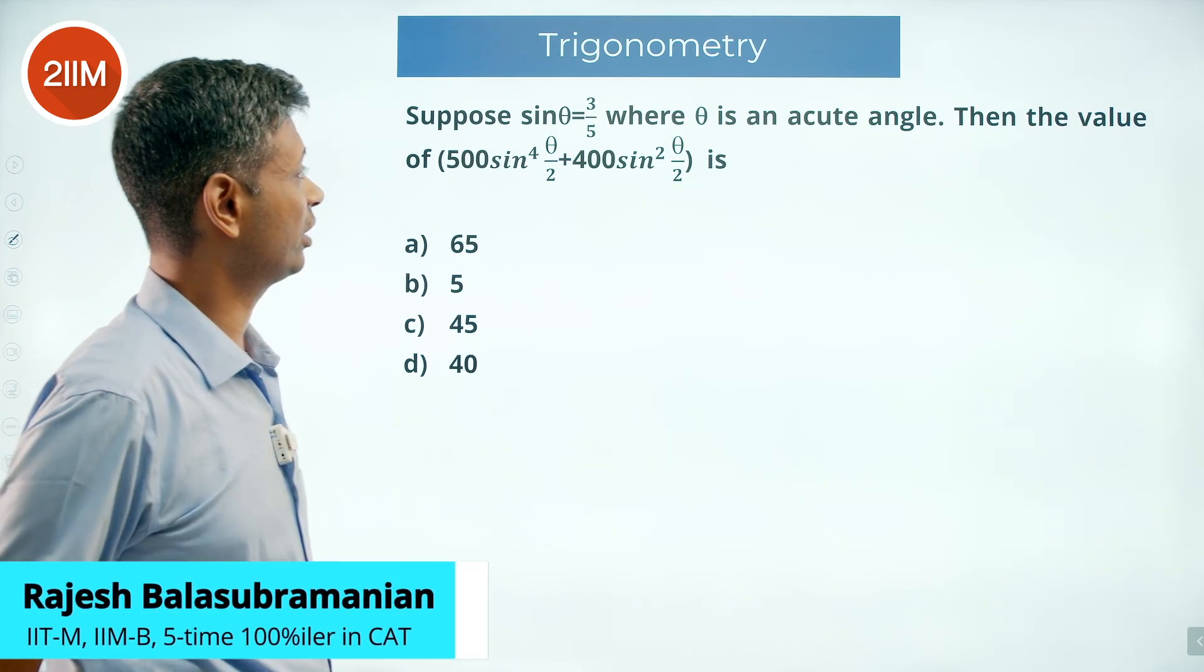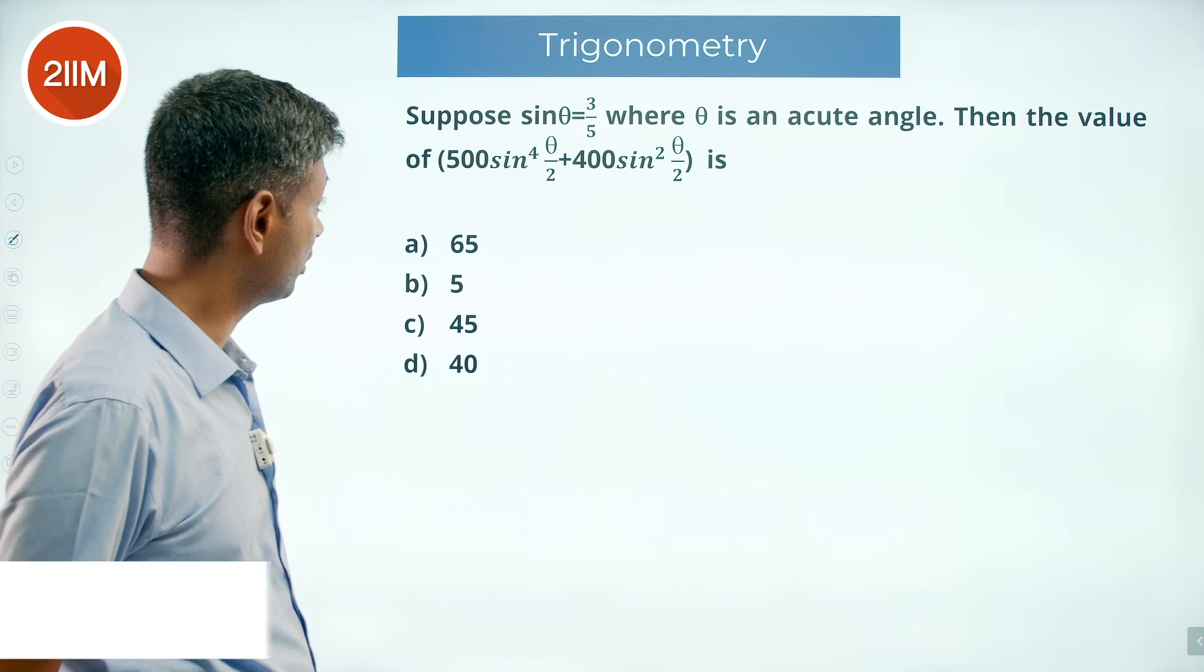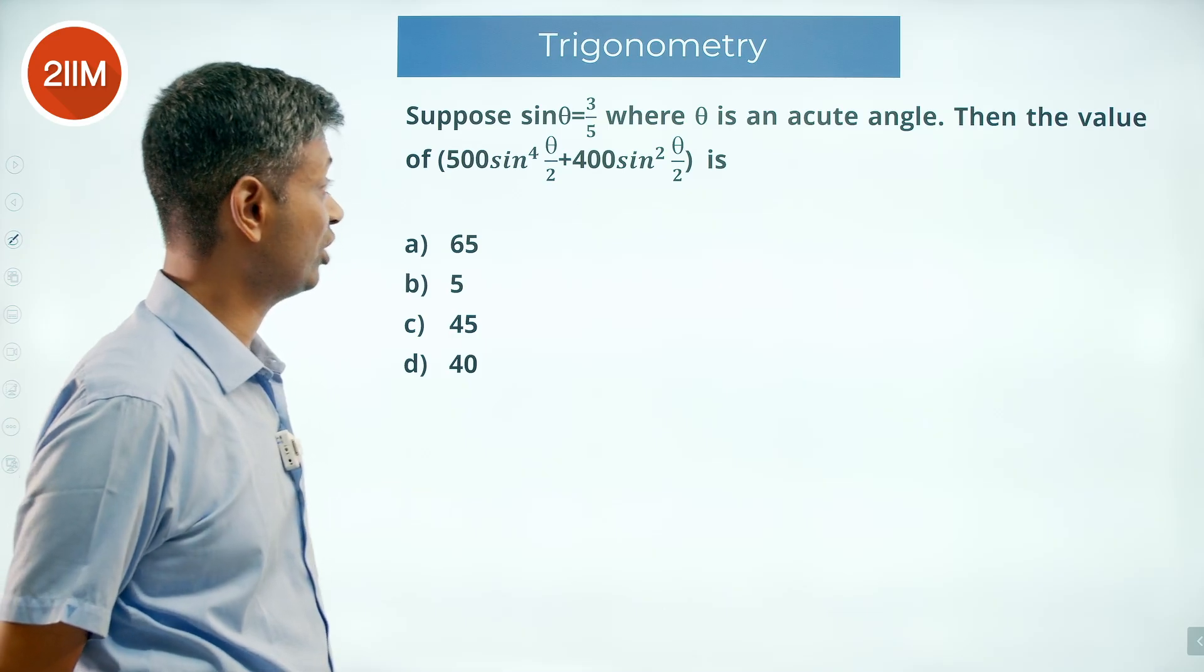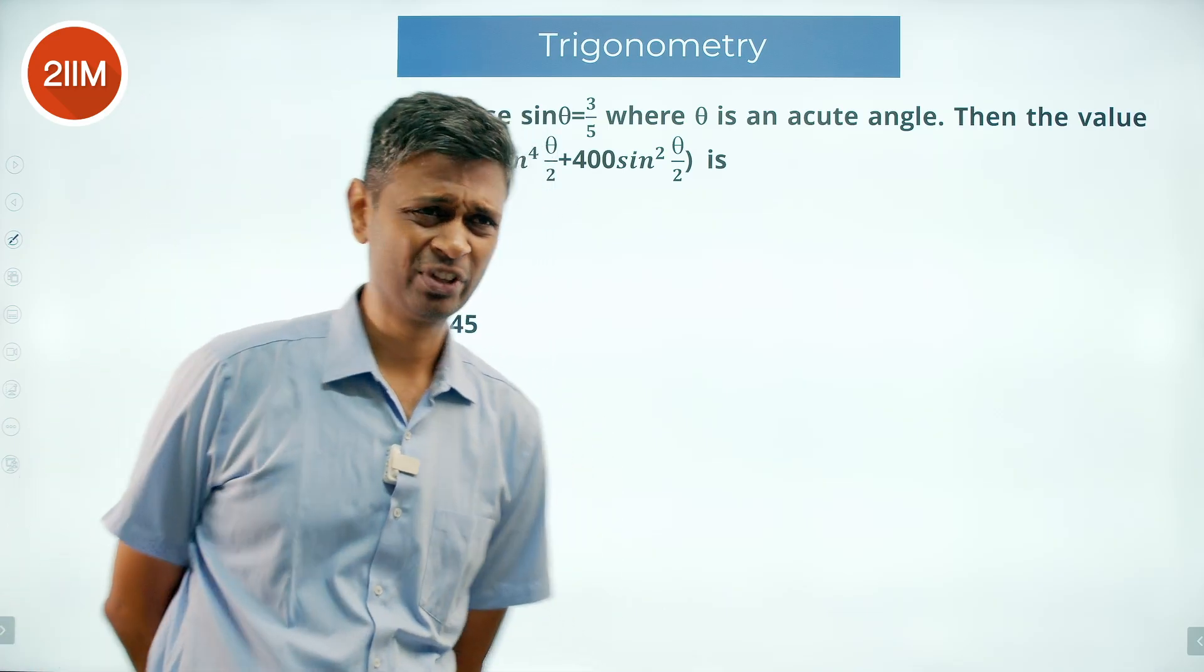Suppose sine theta equals 3/5 where theta is an acute angle, then the value of 500 sine to the power 4 theta by 2 plus 400 sine square theta by 2. This is an interesting question.